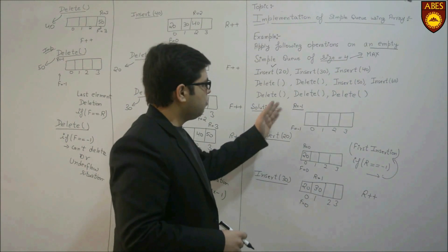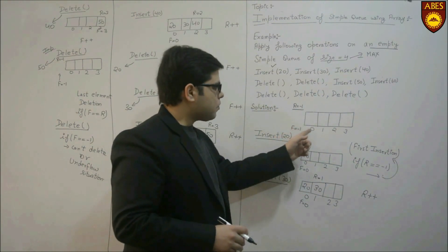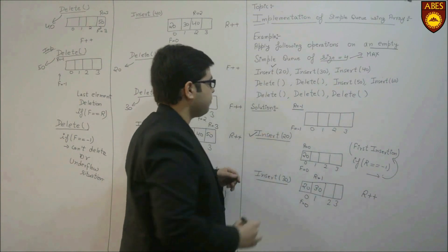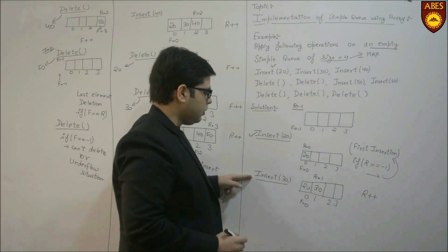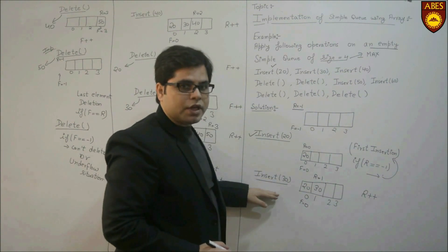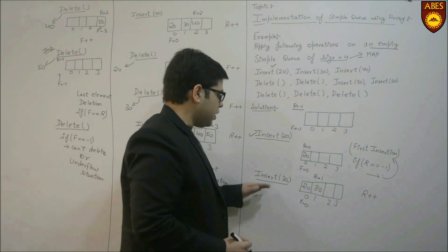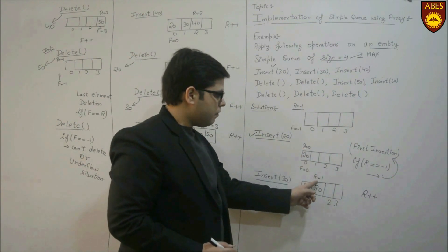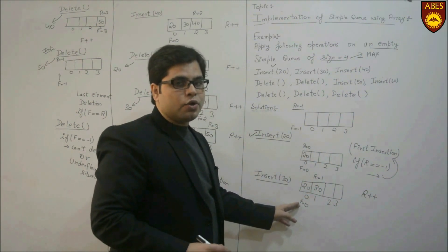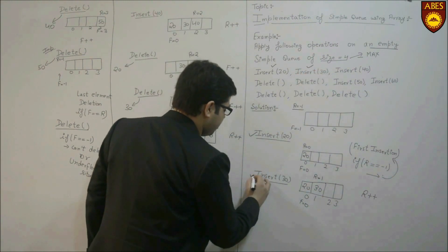Next operation is insert 30. Before this insertion there is already one element in the queue, so this is not the first insertion case. Normally rear will move to the next location and insert 30. Rear was at index 0; now rear moves one step forward to index 1 and inserts 30 there. Front stays at the first element which was inserted. Next we have to insert 40. Again, since this is not the first insertion, rear moves one step forward from index 1 to index 2 and we insert 40 at index 2.